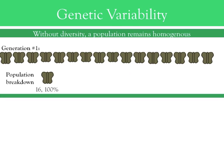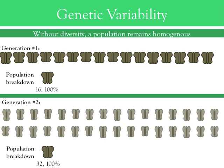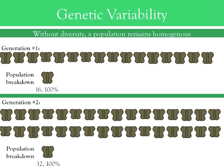Therefore, in a homogenous population of all dark moths, the next generation will also contain all dark moths. Without diversity, there is no way for selection to occur, because there is no phenotype, or version of the moth, that will be more or less successful in passing its genes onto the next generation. In this way, barring migration or mutation, a lack of diversity causes the makeup of the population to be stable.